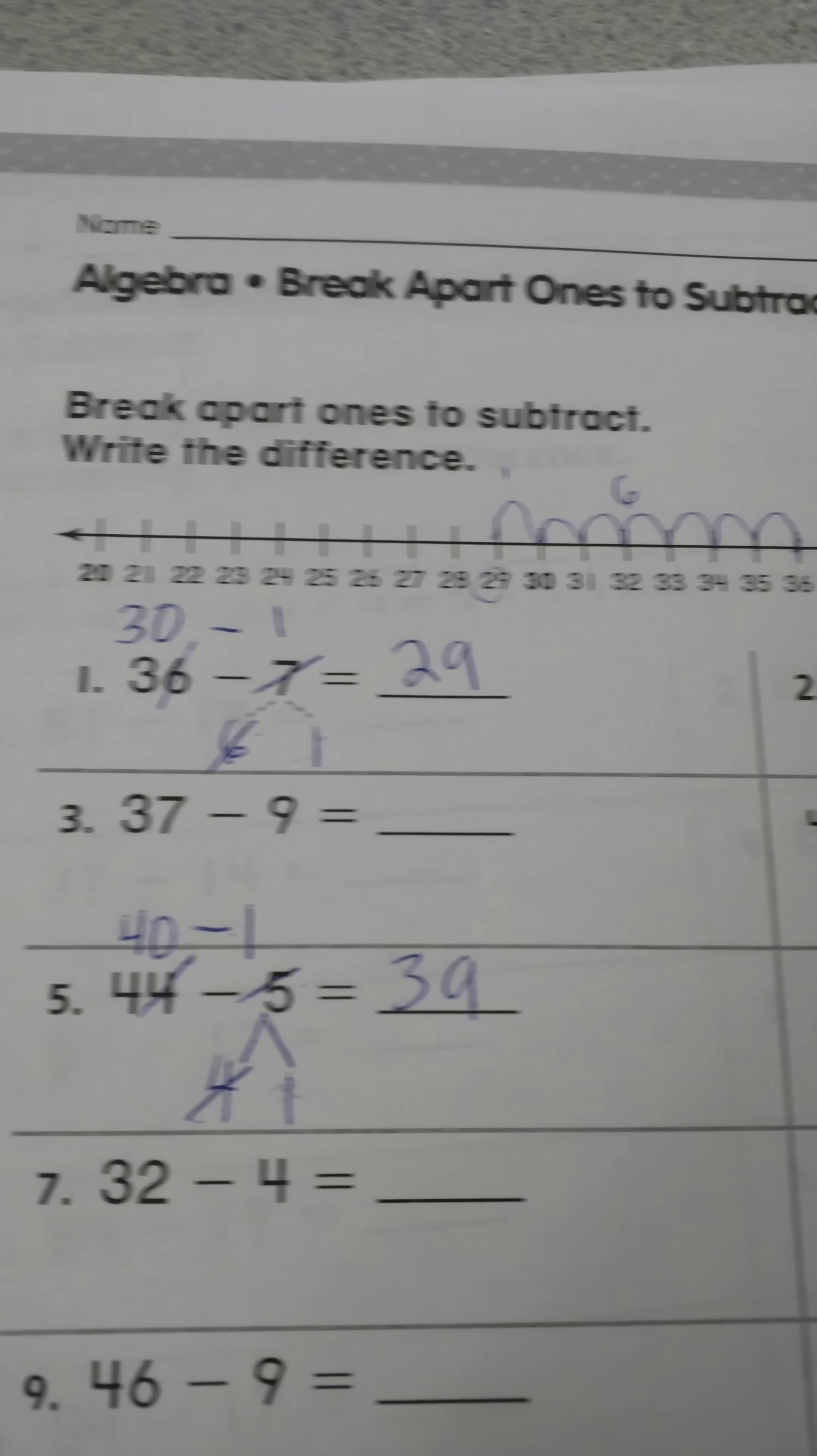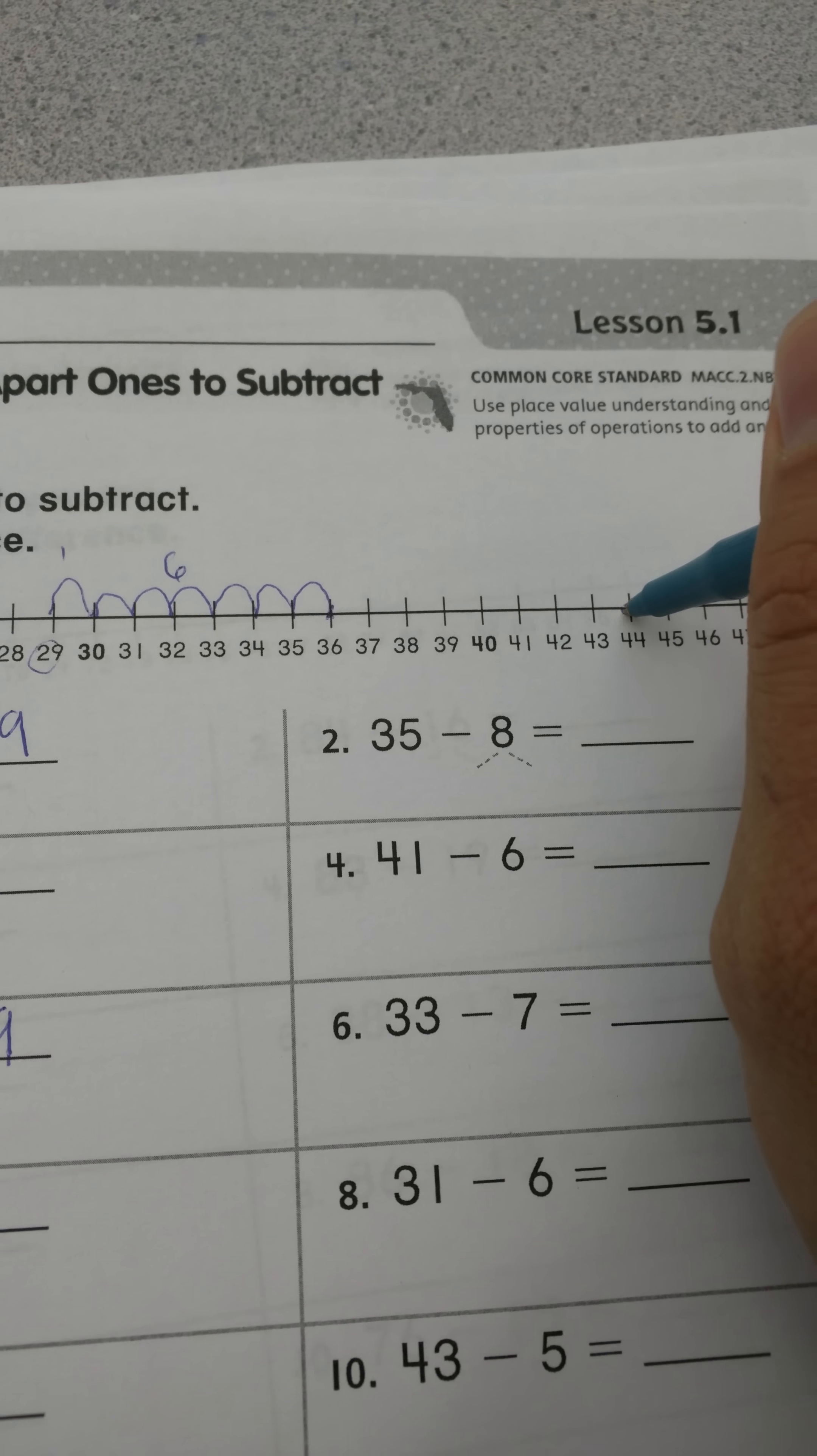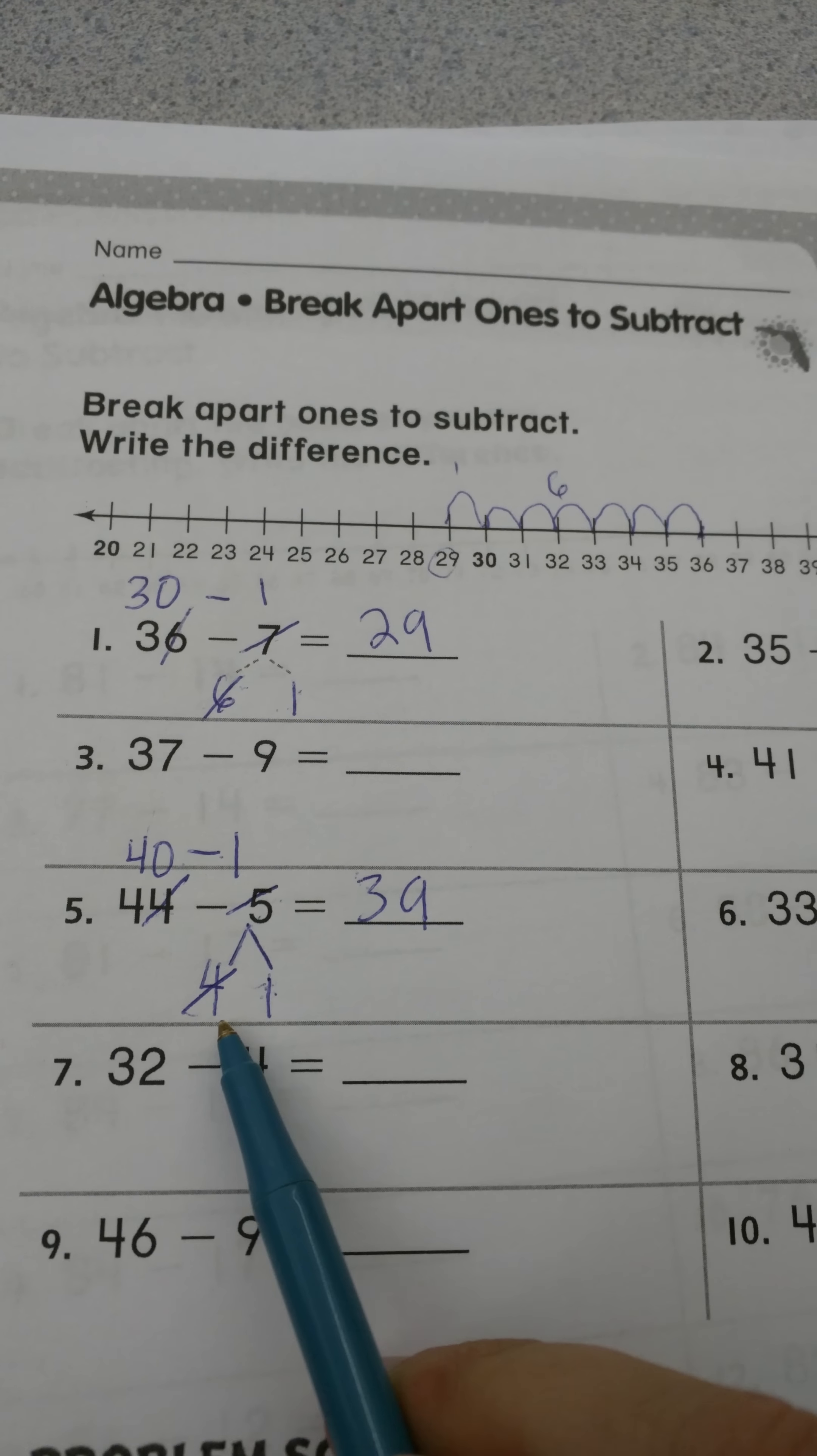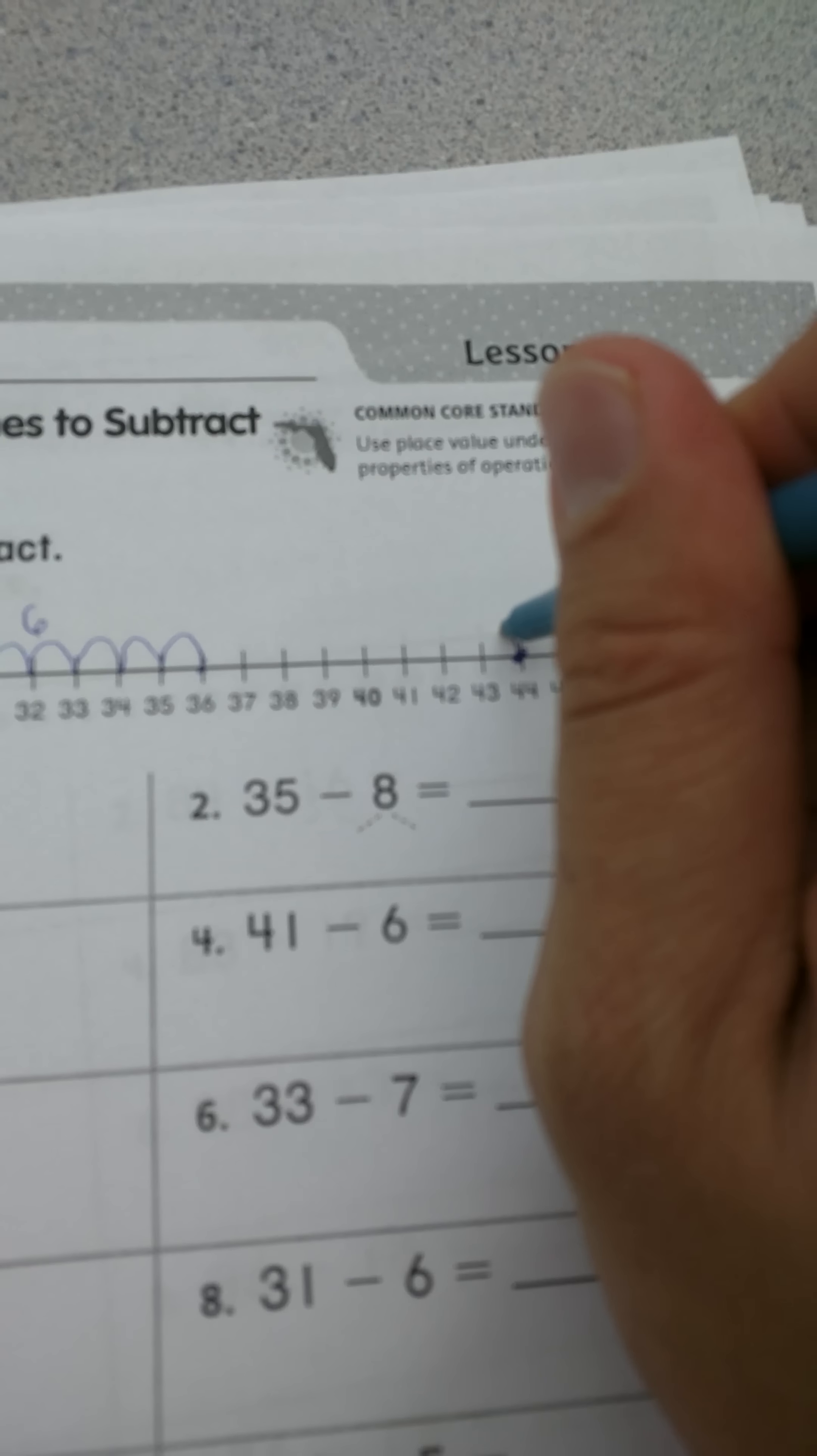Now if I look up here and do it using the number line, I'll go up here and find 44. I broke it up by using four and one. So I'm going to go back four. One, two, three, four, and one more. And there I go. My answer again is 39.